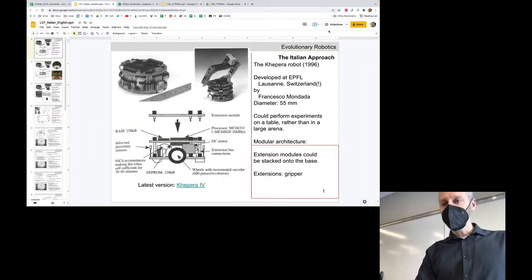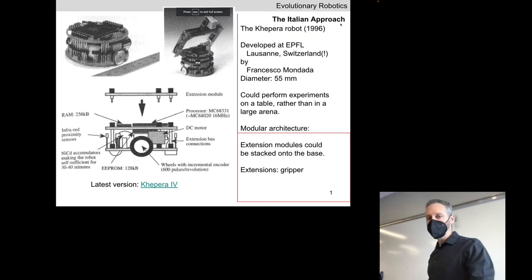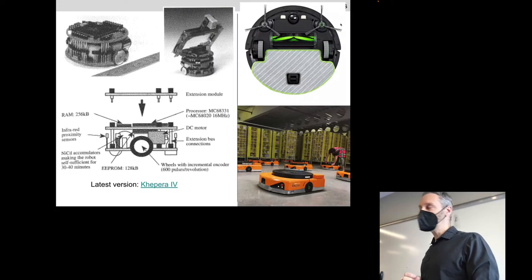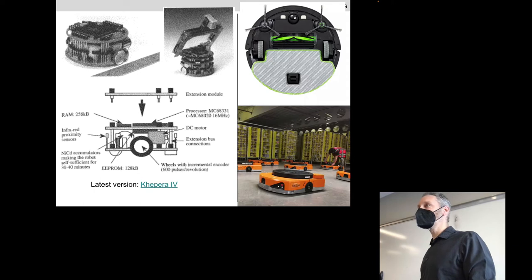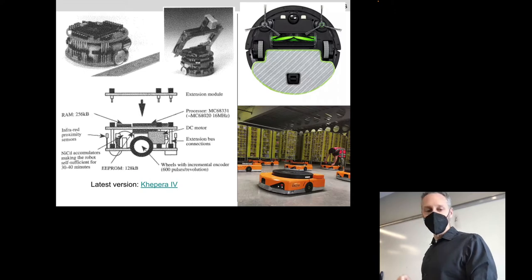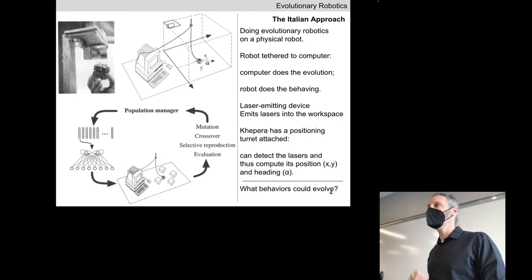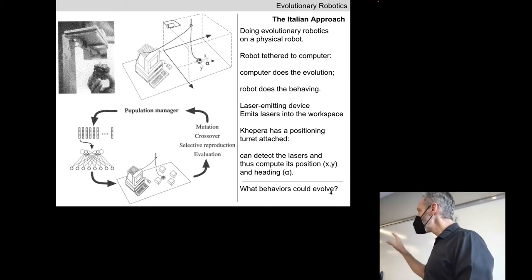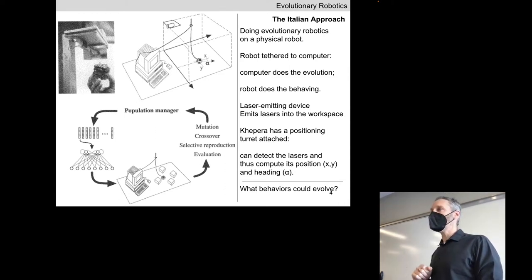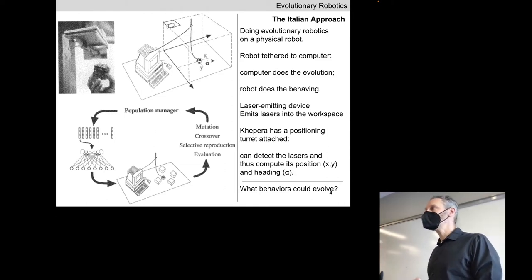We ended last time by getting to know the humble Khepera, which is the great-great-great grandparent of Roomba, Amazon robots, and many robots starting to wheel around in the real world. They all date back to the early 90s. The Khepera was nice to play around with because it was relatively small — you could put it on a tabletop and carry out experiments. We looked at the very first evolutionary robotics experiment, long before physics engines existed.